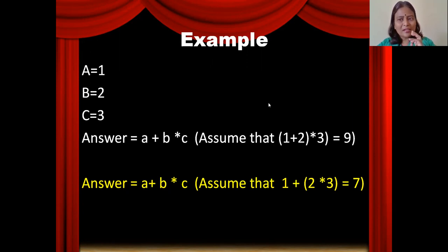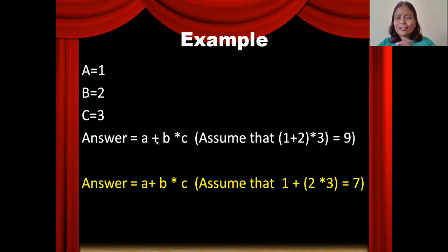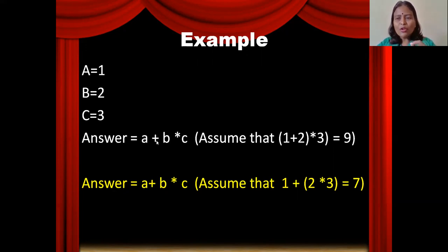In the name of operator precedence, associativity, and order of evaluation — please remember, this is a very simple expression having only two operators, plus and star, yet it leads to two different answers. If you have multiple operators, there would be even more ambiguity. In order to understand the working principle of the C compiler, we must know operator precedence, associativity, and order of evaluation.